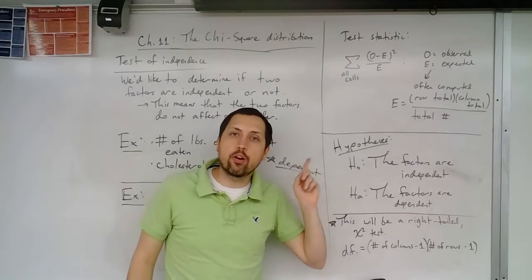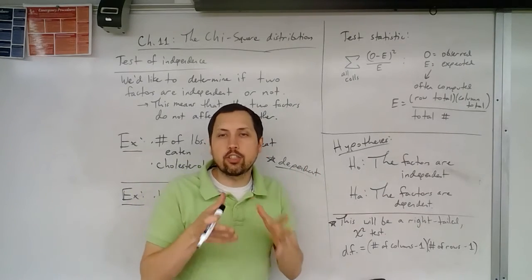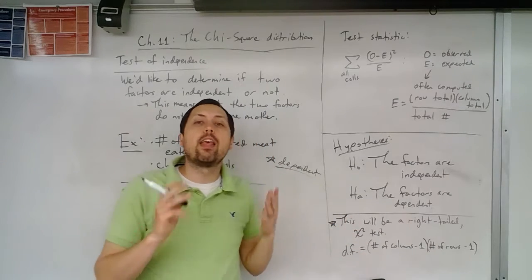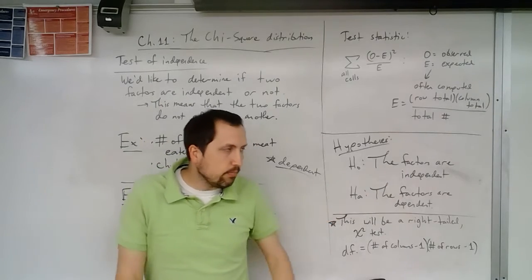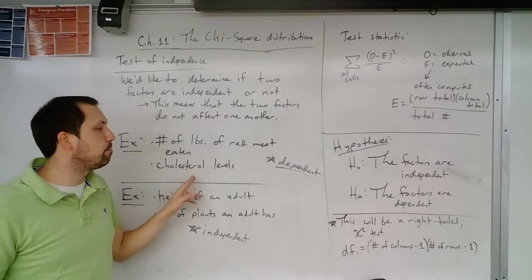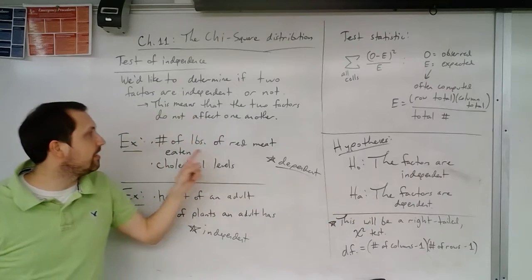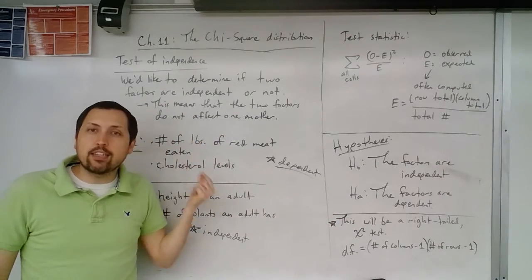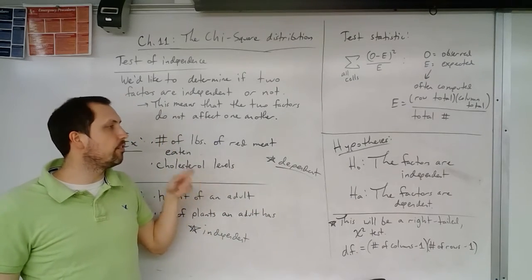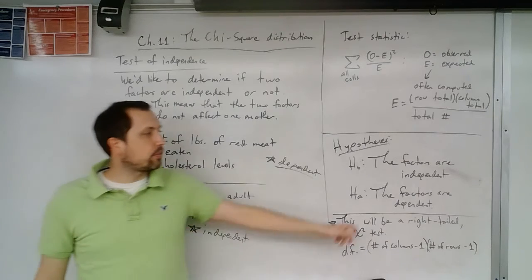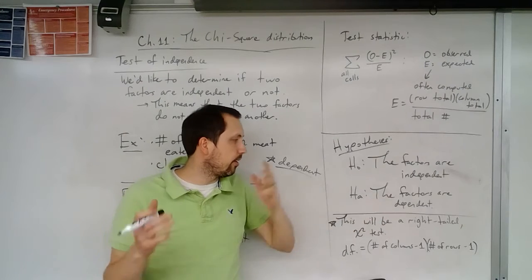So our hypotheses for this test of independence: the null hypothesis says the factors are independent. Now, we'll actually tie in what are we talking about with the factors in the context of the problem. Maybe we'll say the number of pounds of red meat is independent of cholesterol levels. That would be an example of the null hypothesis. The alternative hypothesis would say that the number of pounds of red meat is dependent on the cholesterol levels, or I would probably say the cholesterol levels are dependent on the number of pounds of red meat. But we're saying that the factors are independent means there's no association between those. Dependent, there is some association.